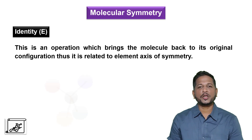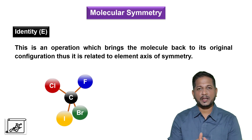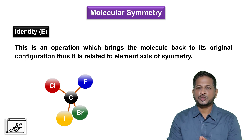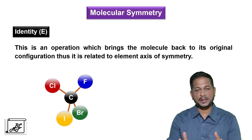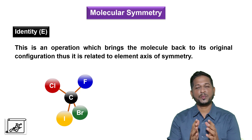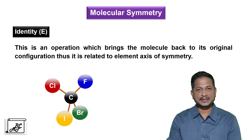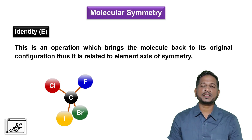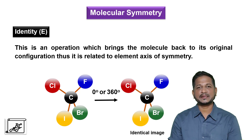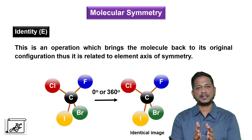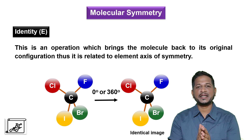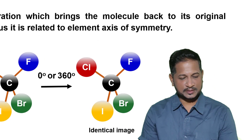For example, consider a molecule where carbon is connected to four different constituents. So there is no plane of symmetry, no center of symmetry, no proper rotational axis, no improper rotational axis. So if we rotate the molecule through 0 degrees or 360 degrees, we will get the identical image. This is called the identity element of symmetry.